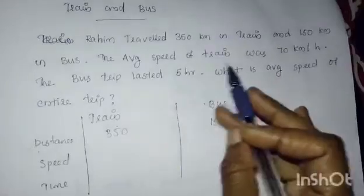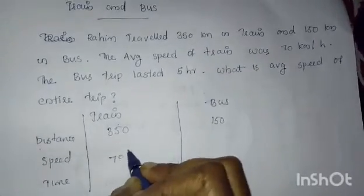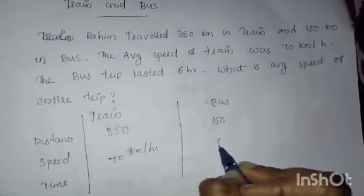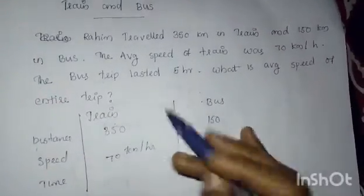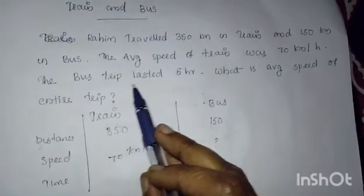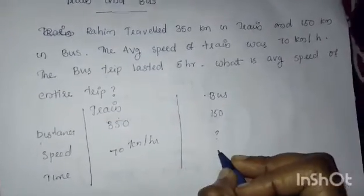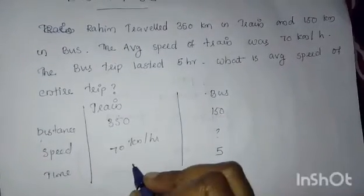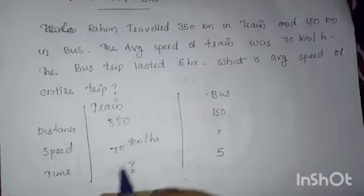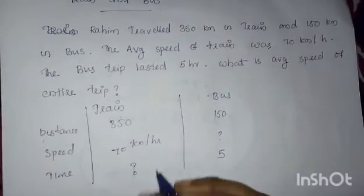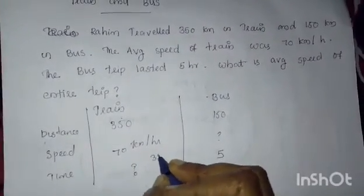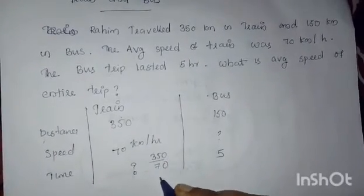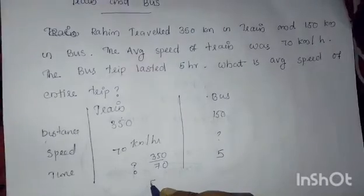The average speed of the train is given as 70 km per hour, but the speed is not given for the bus. The time is given for the bus — the bus trip lasted 5 hours. To find the time for the train, we divide the distance by the speed: 350 divided by 70 gives us 5 hours.